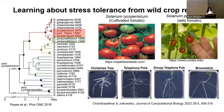Since roots are at the interface of soil salinity, many breeding programs target root architectural traits to develop and improve crop tolerance and yield. Previously, Joukowska and her colleagues have visually identified four root topologies by screening 230 accessions of Solanum pimpinellifolium, which are Christmas tree, telephone pole, droopy telephone pole, and broomstick.